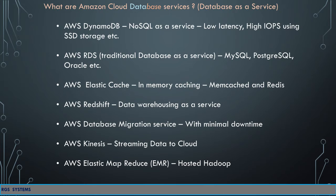The next one is AWS ElastiCache. Caching is very important for many web-based applications, and this is especially an in-memory caching solution. AWS ElastiCache has two different options: you can go with Memcached or Redis. Memcached is a very popular object caching system. If your application is currently using Memcached, when you move to the cloud it will seamlessly work with ElastiCache because Memcached is protocol-compliant.